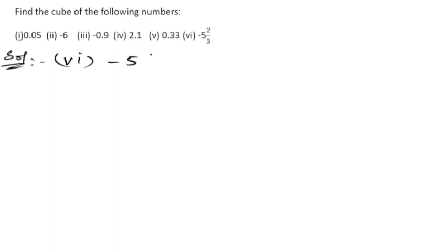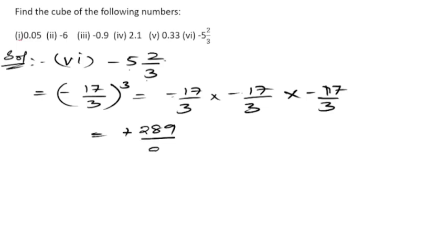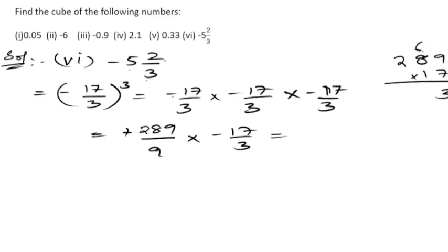Next problem: minus 5 and 2/3 whole cube. First, convert the mixed fraction to improper: 3 fives are 15, 15 plus 2 is 17, so it becomes minus 17 upon 3, whole cube. We write minus 17/3 into minus 17/3 into minus 17/3. Multiplying 17 by 289: seven nines are 63, seven eights are 56 plus 6 is 62.